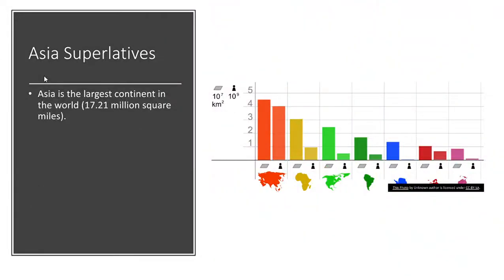We'll start with the size of Asia. This is called the Asia superlatives. You can take a look at this chart here and you will see that Asia is the largest continent in the world by size in terms of square miles — over 17.21 million square miles. And that is the size. The second is the population.